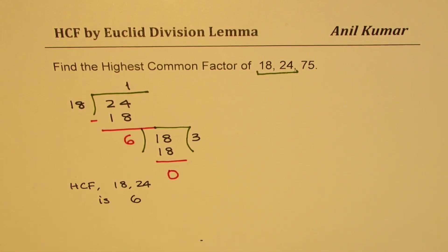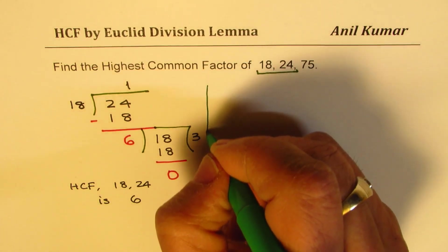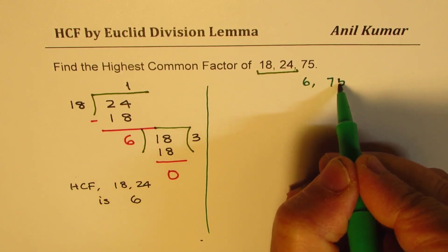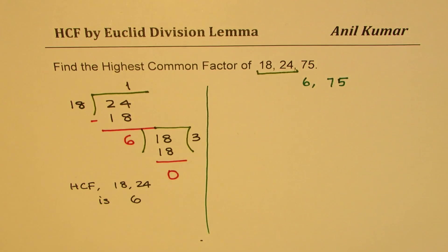Now we will check if 6 goes into 75 or not. So now we'll try between 6 and 75. But the process remains the same. The numbers change.